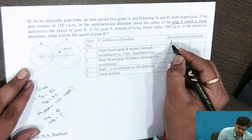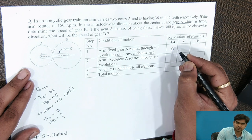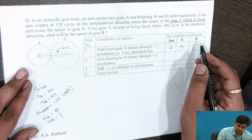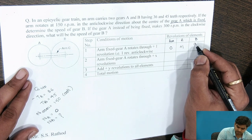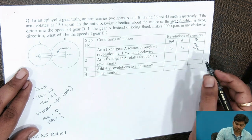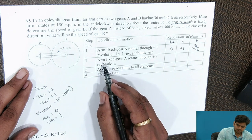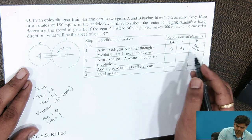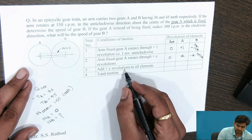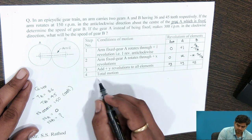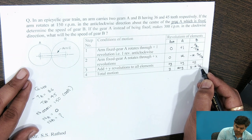The arm is fixed: revolution of arm is zero. Gear A makes plus one rotation; speed of B equals TA by TB. Since both gears mesh externally, we change the sign convention. For X revolutions of gear A: motion of B is minus X into TA by TB. Adding Y revolution to all elements: plus Y, plus Y, plus Y. Total motion: arm = Y, gear A = X plus Y, gear B = Y minus X into TA by TB.